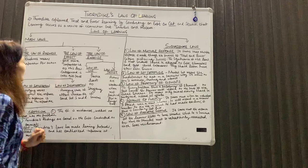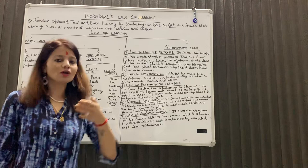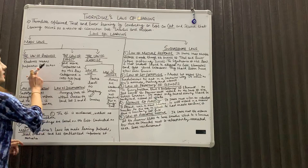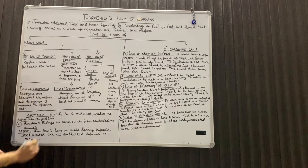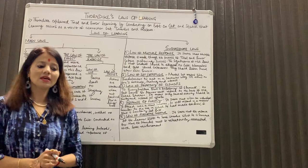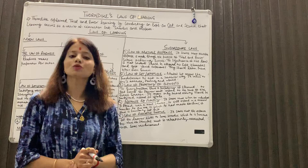Thorndike ने दो category दी थी — एक उन्होंने कहा primary laws और दूसरी category को उन्होंने कहा secondary laws. Primary laws को उन्होंने further तीन category में divide किये थे. पहला है आपका the law of readiness. Readiness means preparation for action. Thorndike का ये मानना था कि अगर हम चाहते हैं कि कोई भी individual किसी चीज़ को सीखे, तो हमें उसको पहले physically और mentally ready करना होगा.